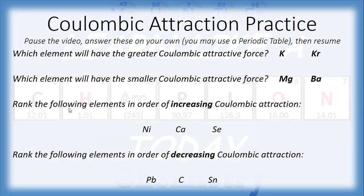The second example asks which element will have the smaller Coulombic attractive force: magnesium or barium. Magnesium is in period three, whereas barium is in period six, meaning barium has six energy levels versus magnesium's three. Since the question asks for the smaller Coulombic attractive force and a greater distance means a smaller attractive force, we want the bigger atom — and that would be barium with its six energy levels.